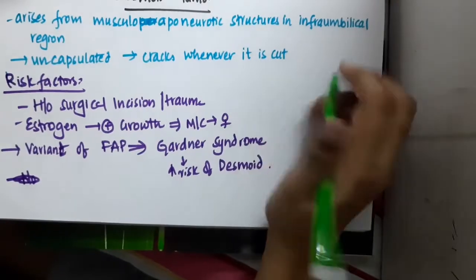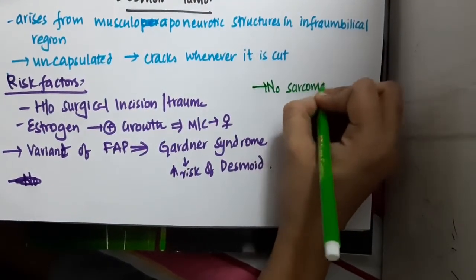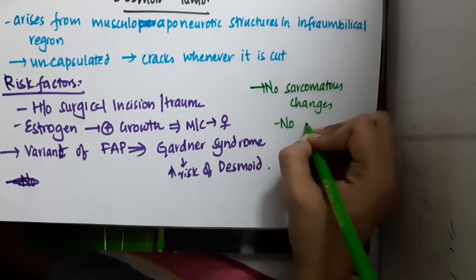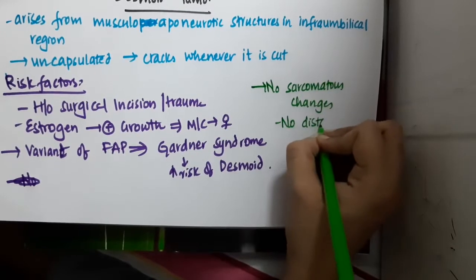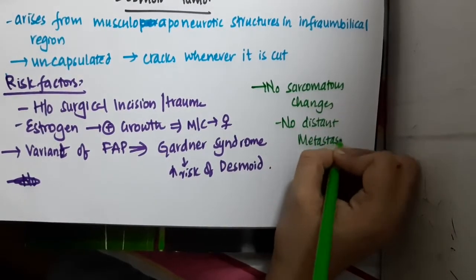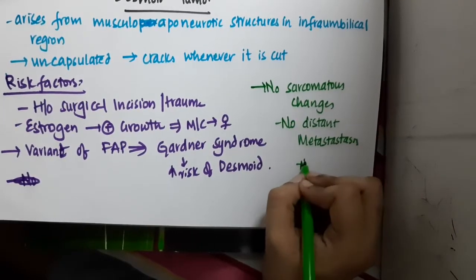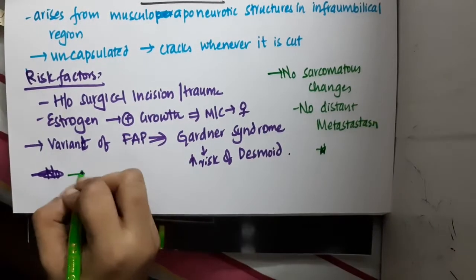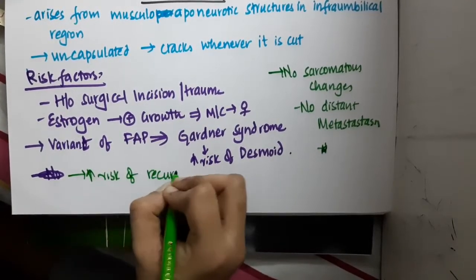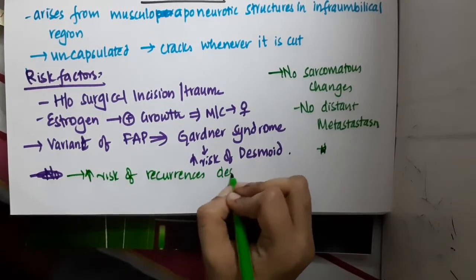One more important thing is this Desmoid tumor has no sarcomatous changes. It does not undergo any sarcomatous changes nor does it have any distant metastasis. There is increased risk of recurrences even after excision.